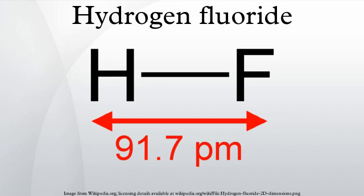Hydrogen fluoride is a chemical compound with the chemical formula HF. This colorless gas or liquid is the principal industrial source of fluorine, often in the aqueous form as hydrofluoric acid, and thus is the precursor to many important compounds including pharmaceuticals and polymers. HF is widely used in the petrochemical industry and is a component of many superacids.